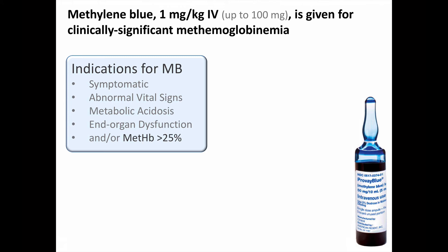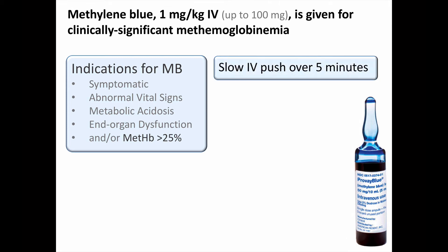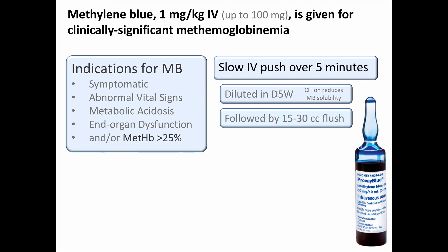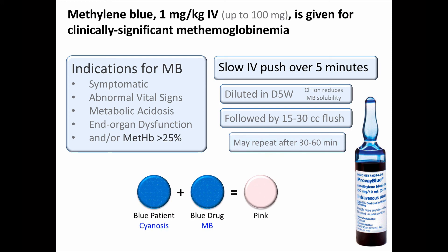Methylene blue is given at a dose of 1 mg per kg IV for clinically significant methemoglobinemia, defined as levels producing symptoms consistent with hypoxia, abnormal vital signs, metabolic acidosis, and/or a methemoglobin level of 25% or higher. It is administered by slow IV push over 5 minutes, diluted with D5W since chloride in saline can reduce its solubility, followed by a D5W flush since it can be irritating to blood vessels. The dose may be repeated if necessary in 30 to 60 minutes. A useful mnemonic: blue plus blue equals pink — a blue patient from methemoglobin plus a blue drug makes the patient pink up.